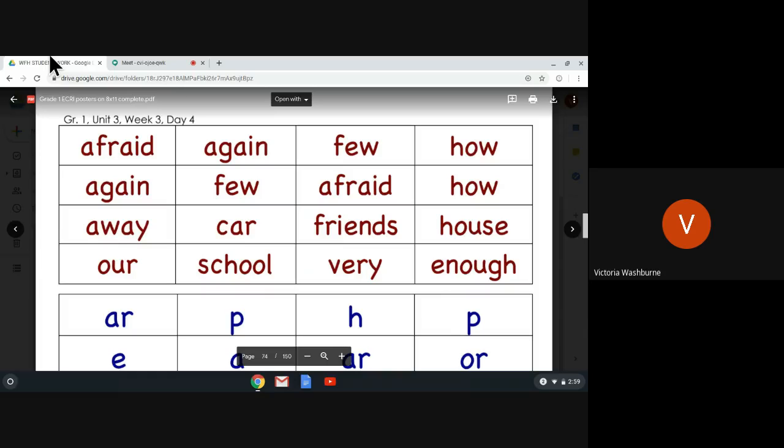I'll do the first two for you, and then we can do the rest of them together. The first one is my turn: afraid. Your turn: afraid. Say it, afraid. Spell it: A-F-R-A-I-D. Say it, afraid.